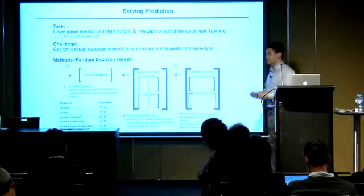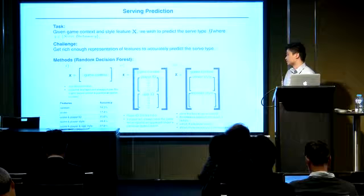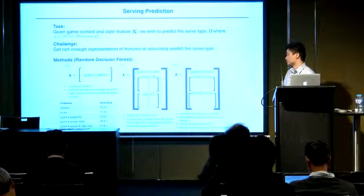The performance results: there are seven types of serve for each direction, so random chance is around 14%. With only the game context, we get about 14%. With the style vector included, we can improve it to about 27–28%.